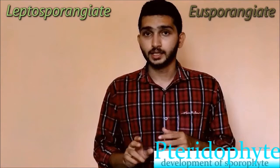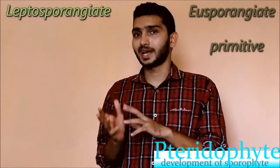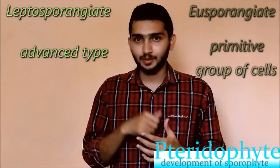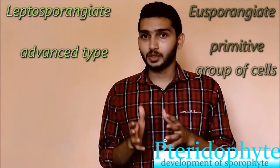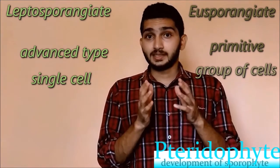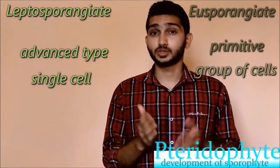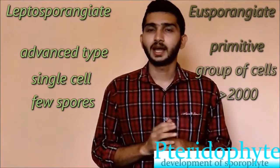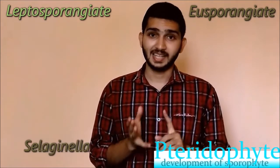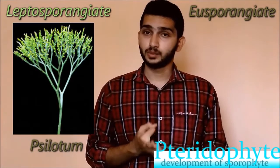The development of sporophytes is divided into two types: eusporangiate and leptosporangiate. Eusporangiate types are formed by a group of cells and they have many jacket layers with more than 2000 spores. Leptosporangiate types are formed by a single cell. Examples for eusporangiate type are Selaginella, Psilotum, Equisetum, and Lycopodium.